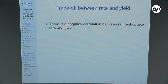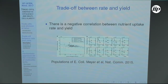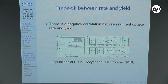Now I discuss the specific trade-off between uptake rate and the yield of the process of converting resource into energy. There is a negative correlation: cells that can take up more resource are very inefficient at converting it, while cells with a lower uptake rate have a very high yield and can convert the same amount of resource into energy more efficiently.